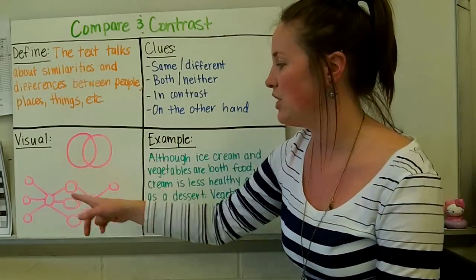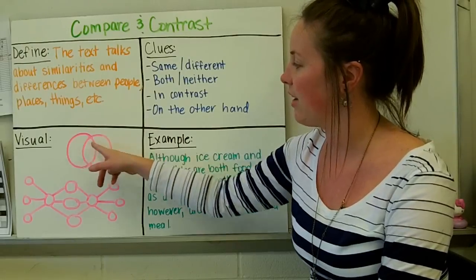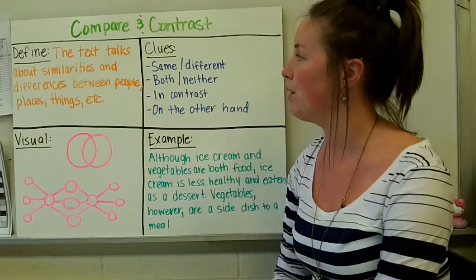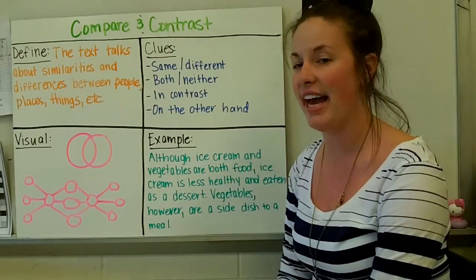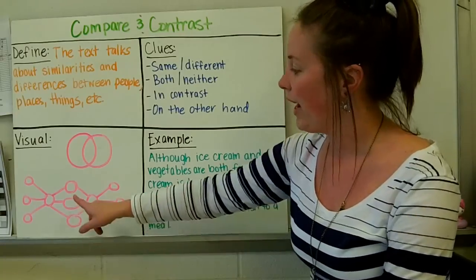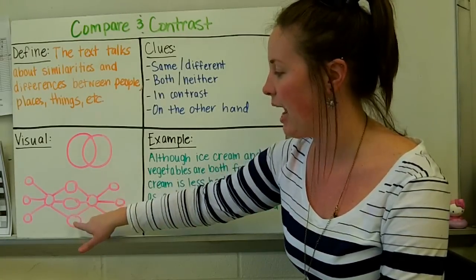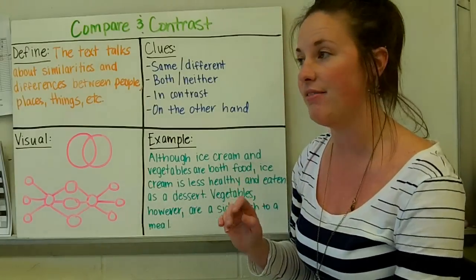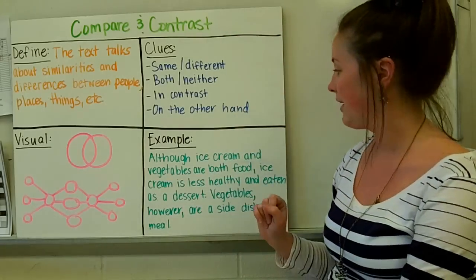Possible visuals that you could use. The first one is just a very simple Venn diagram. You know, the two things that are different go on the outside of the circles. In the inner circle, you would put the things that they have in common. And we also have a double bubble map where you would put your two topics in the middle. The things they have in common would go in between the two circles. And then the things that they have that are not in common would go around the outside edges.